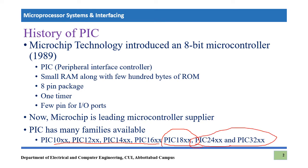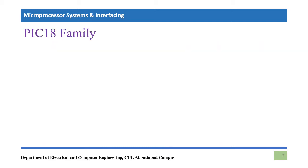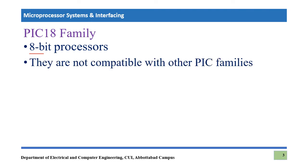PIC18 is the only 8-bit microcontroller and it is a trade-off between various things, while PIC24 and PIC32 are 24 and 32-bit microcontrollers which are more difficult to understand. In PIC18 family, all of them are 8-bit processors. 8-bit means the number of bits which can be processed by a processor in one machine cycle, and that is why they are known as 8-bit processors.